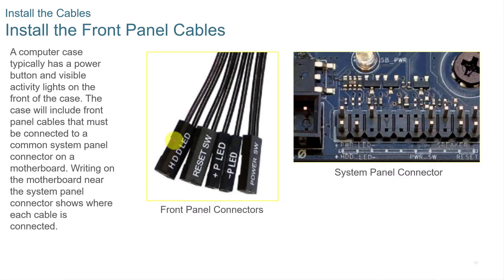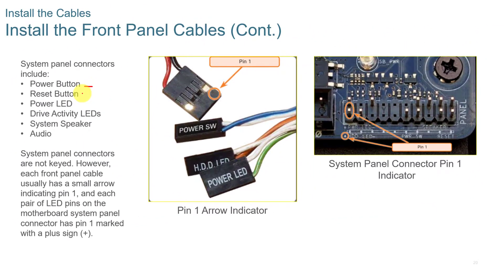When installing the front panel cables, you'll connect LEDs, the reset switch, power LEDs, and power switch. Check the motherboard manufacturer's documentation to make sure which connectors go where. Usually the motherboard has labels printed on it for the hard disk drive LED, power switch, reset button, and speaker. These small connectors can be difficult to plug in. The most common connections are: power button, reset button, power LED, drive activity LED, system speaker, and audio. Make sure you're getting the polarity right — plus and minus — on the correct pins.